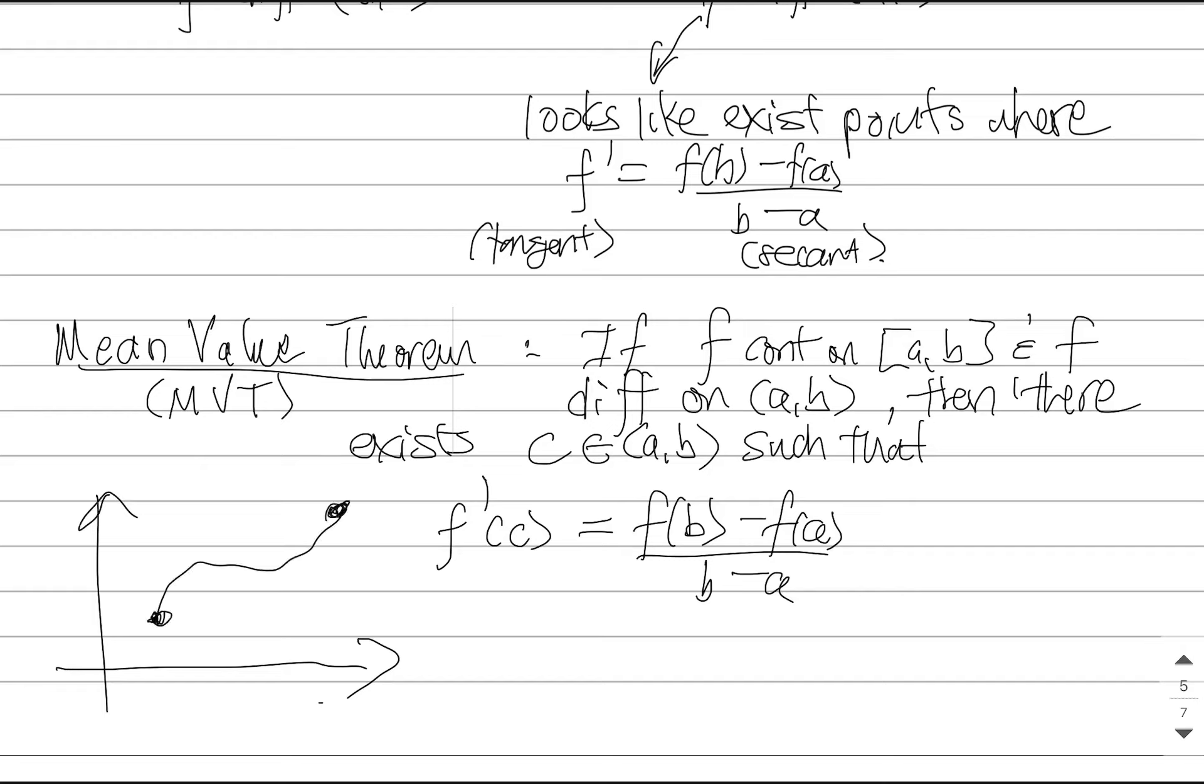The picture that goes along with this is just like I drew before. If you have a function with no holes, no gaps, no jumps, no breaks, no pointy things, and you talk about drawing it, there has to be at least one point where the tangent line on the function matches the tangent line there. And that's what the mean value theorem says.